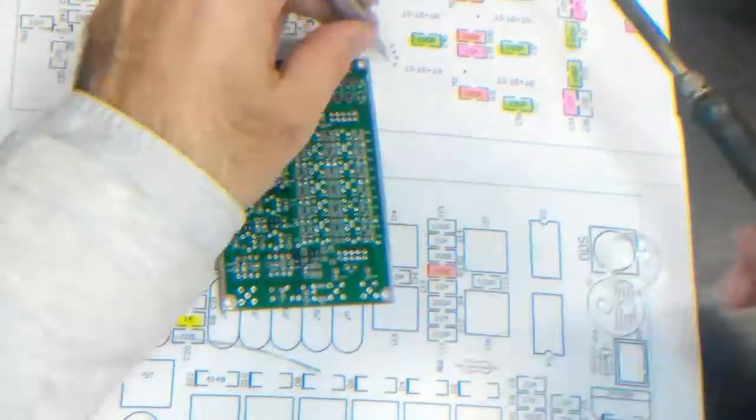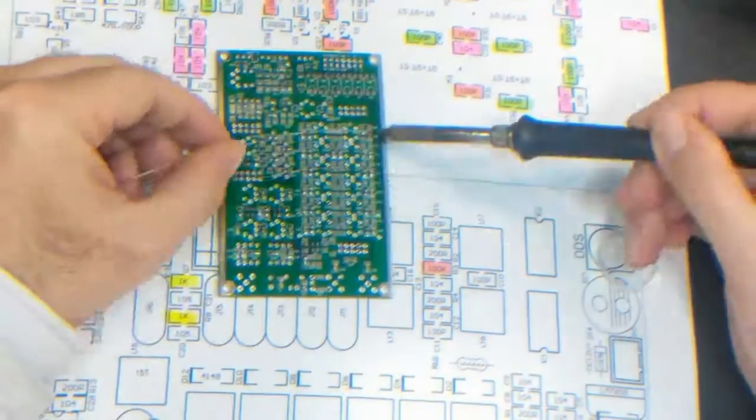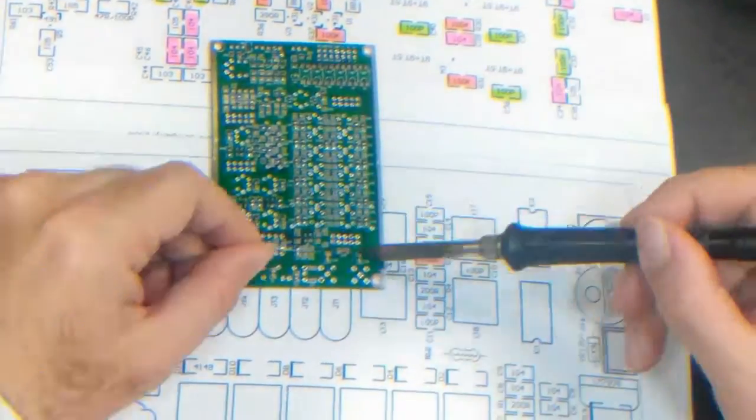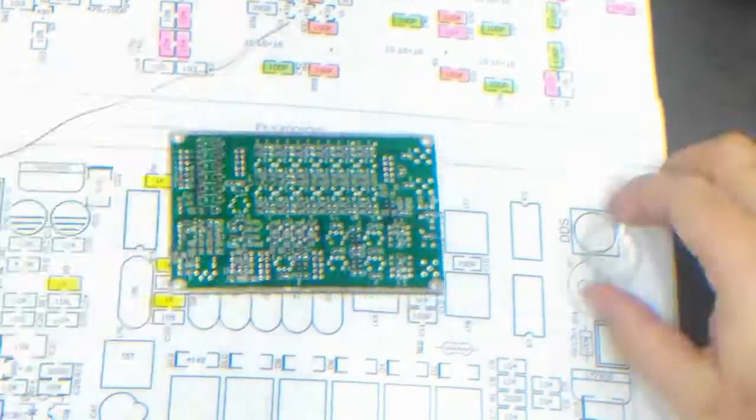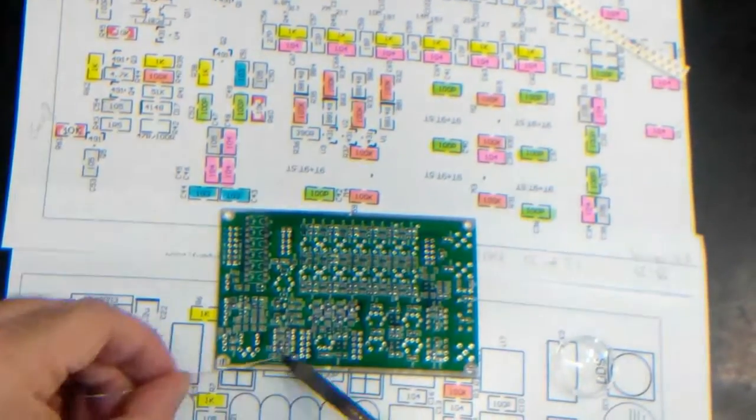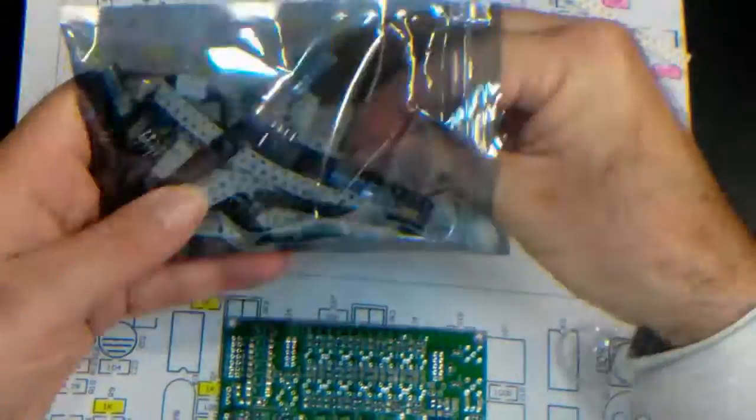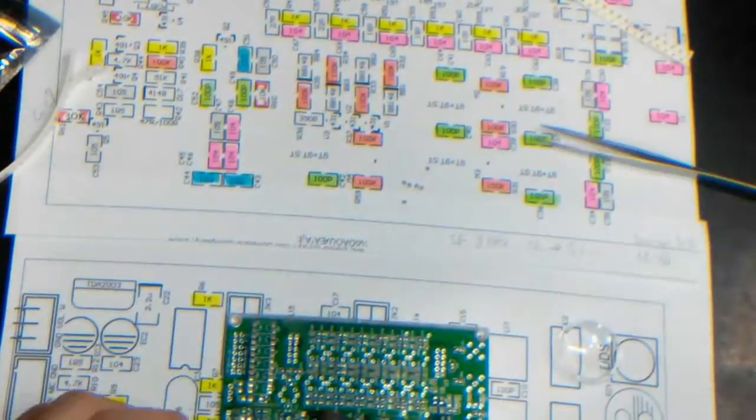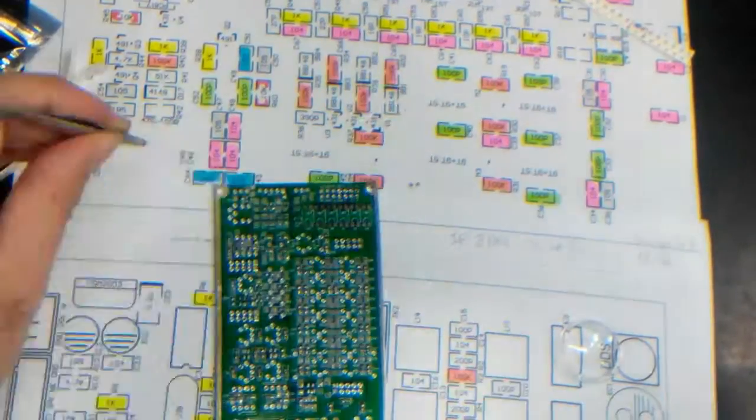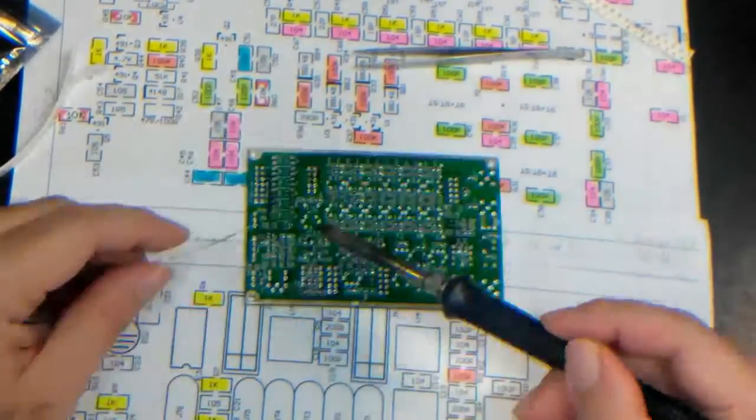Remember to place all the components and solder all their pads. The values of the resistors are marked on their body, check with a magnifying lens when needed.